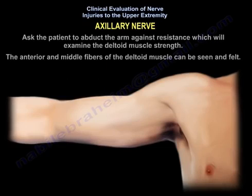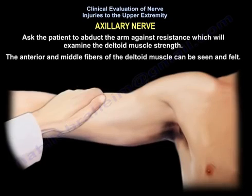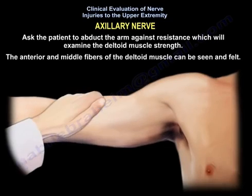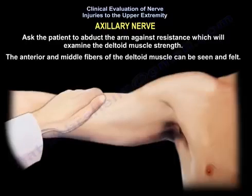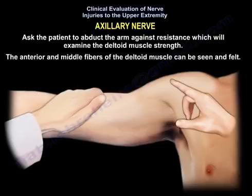To examine for axillary nerve injury, ask the patient to abduct the arm against resistance, which tests the deltoid muscle strength. The anterior and middle fibers of the deltoid muscle can be seen and felt during this maneuver.